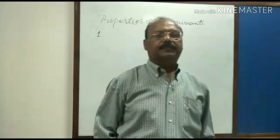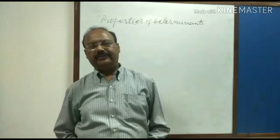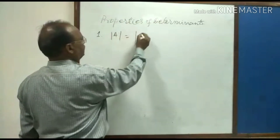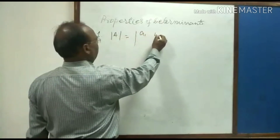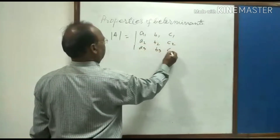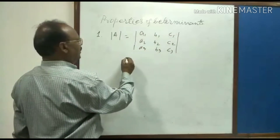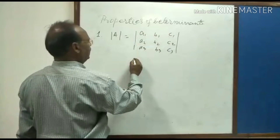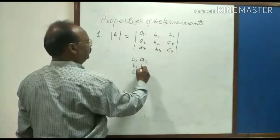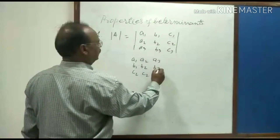In any determinant, if corresponding rows and columns are interchanged with each other, there will be no change in the value of the determinant. For example, suppose determinant A is given having elements a1 b1 c1, a2 b2 c2, a3 b3 c3. If we interchange the first row with the first column, then first row a1 b1 c1 becomes first column a1 b1 c1, second row a2 b2 c2 becomes second column a2 b2 c2, and third column becomes a3 b3 c3.